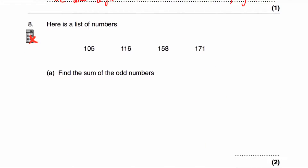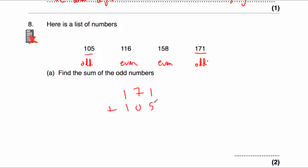Question number 8 says: here's a list of numbers — 105, 116, 158, and 171. We've been asked to find the sum of the odd numbers. The word 'sum' in math means to add up. So 105 ends in a 5 — that's odd. 116 is even. 158 is even, it ends in an 8. And 171 ends in a 1, so that is an odd number. So we need to add together 105 and 171: 171 plus 105. Adding the 1s: 1 plus 5 is 6, 7 plus 0 is 7, and 1 plus 1 is 2, so the answer is 276.